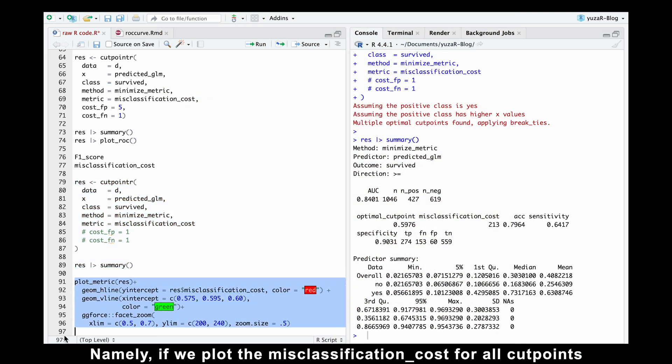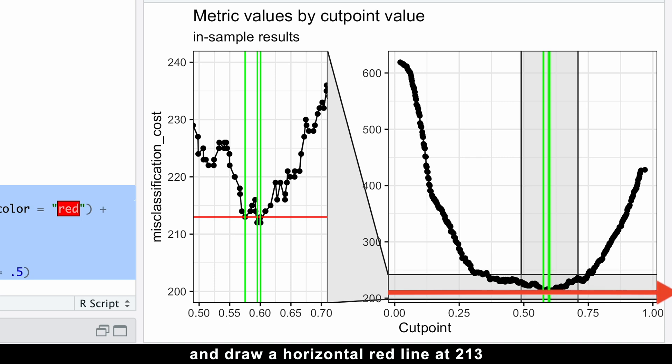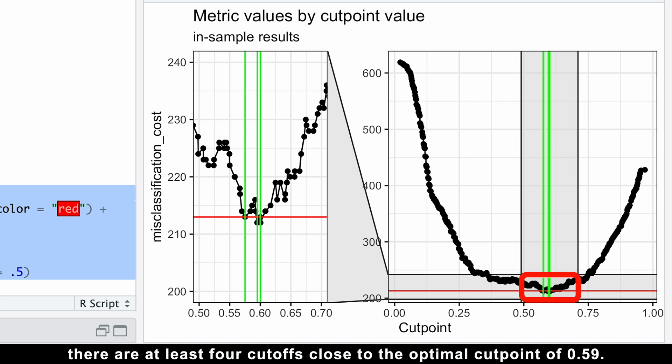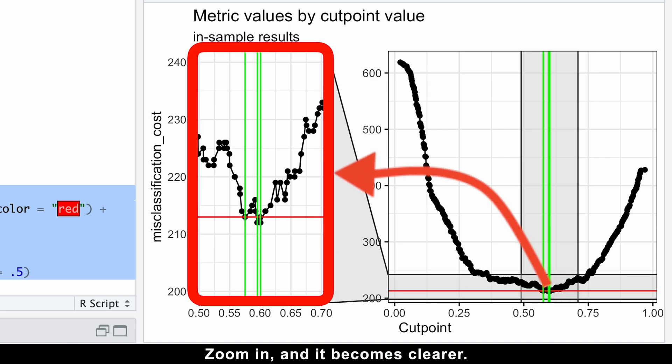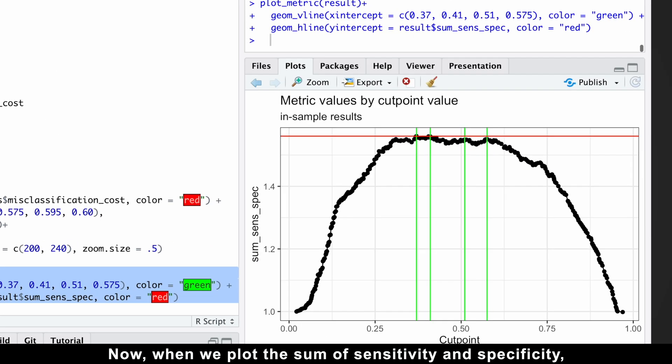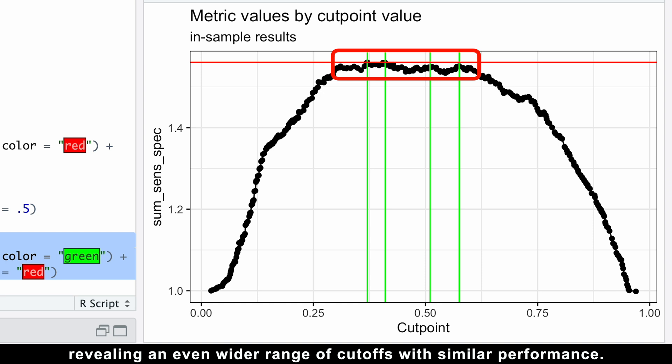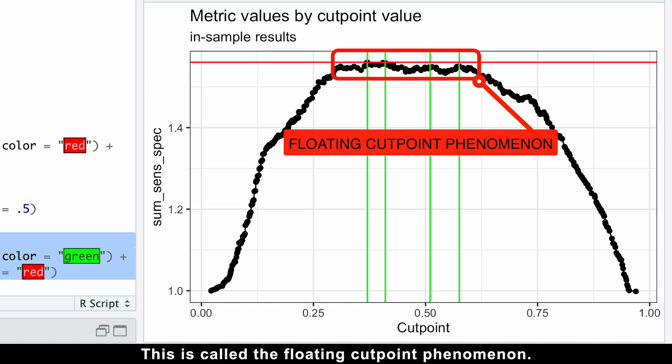Namely, if we plot the misclassification cost for all cutpoints, and draw a horizontal red line at 213, the minimized misclassification cost value, we'll notice something interesting. There are at least four cutoffs close to the optimal cutpoint of 0.59. Zoom in, and it becomes clearer. Now, when we plot the sum of sensitivity and specificity, the curve flattens even more, revealing an even wider range of cutoffs with similar performance. This is called the floating cutpoint phenomenon.